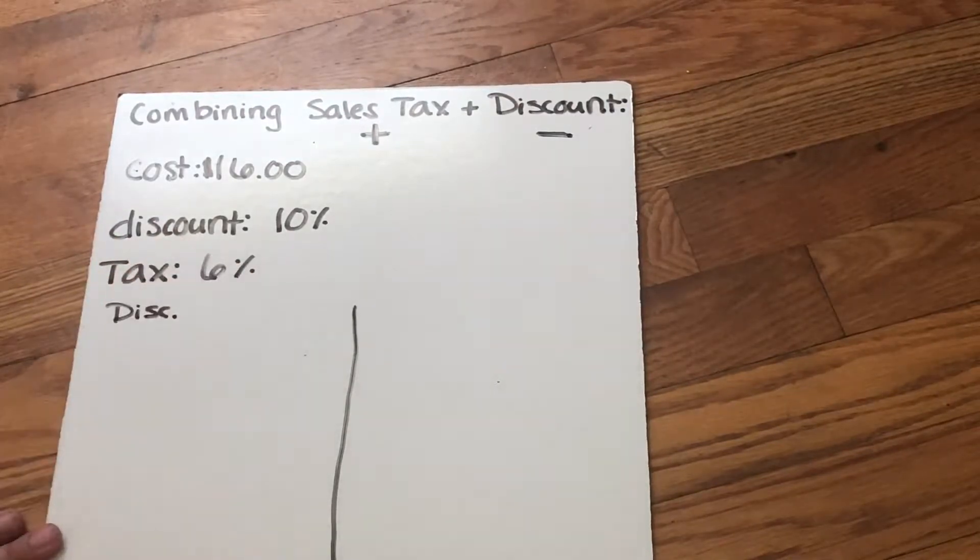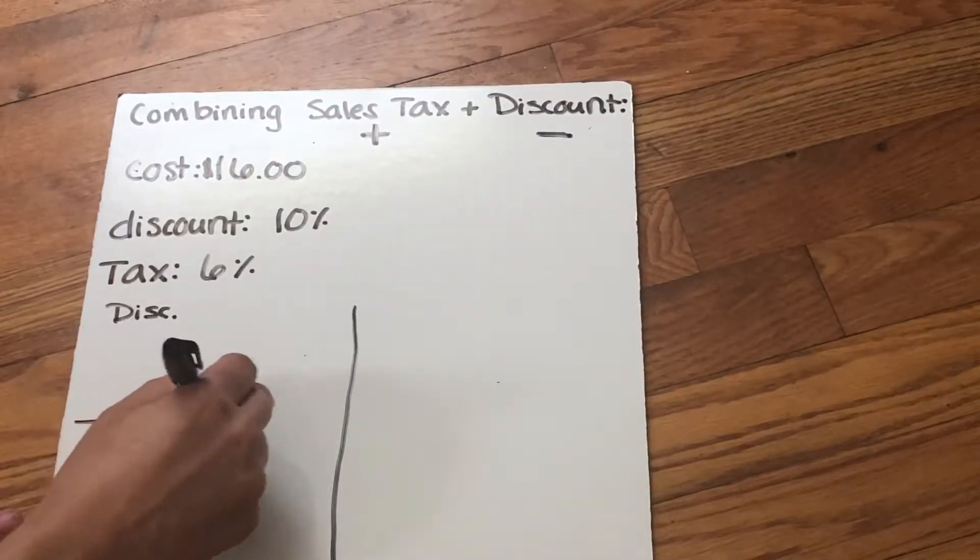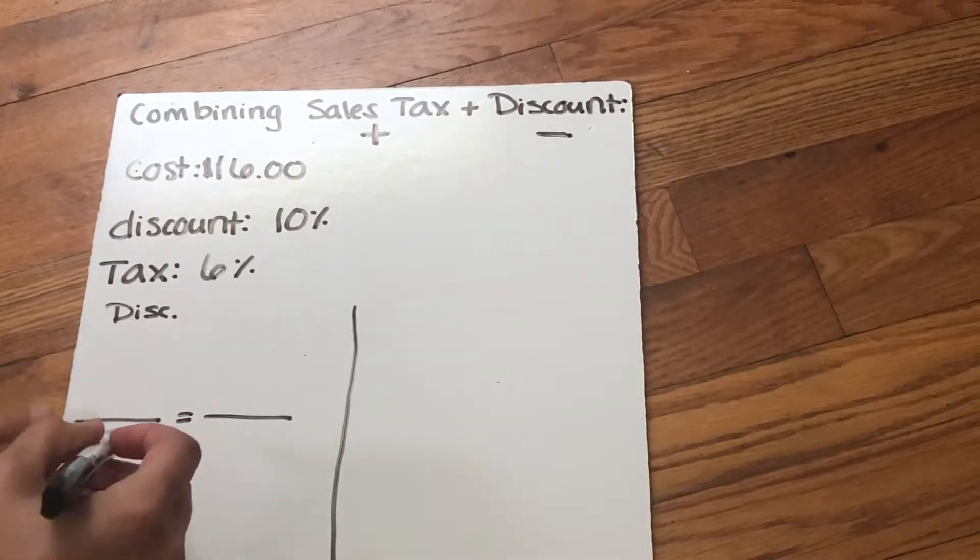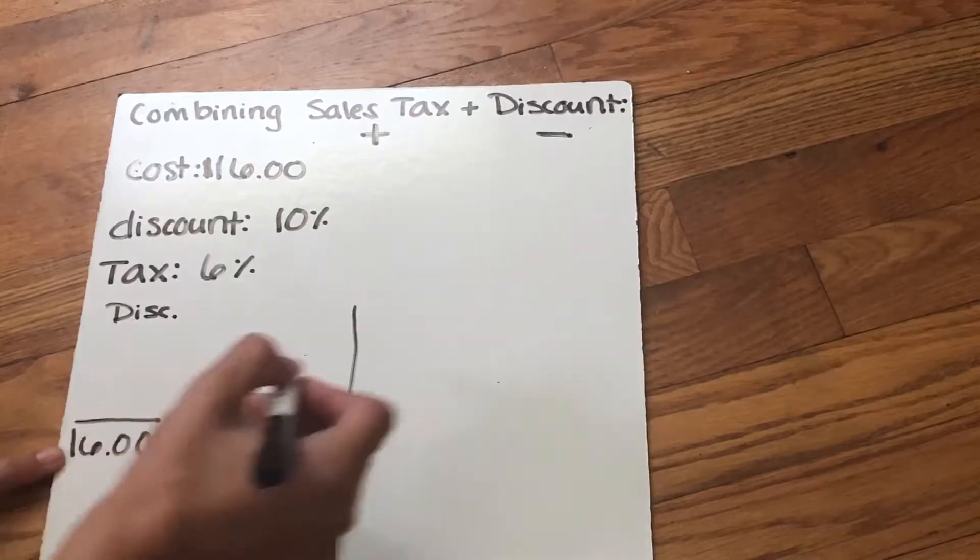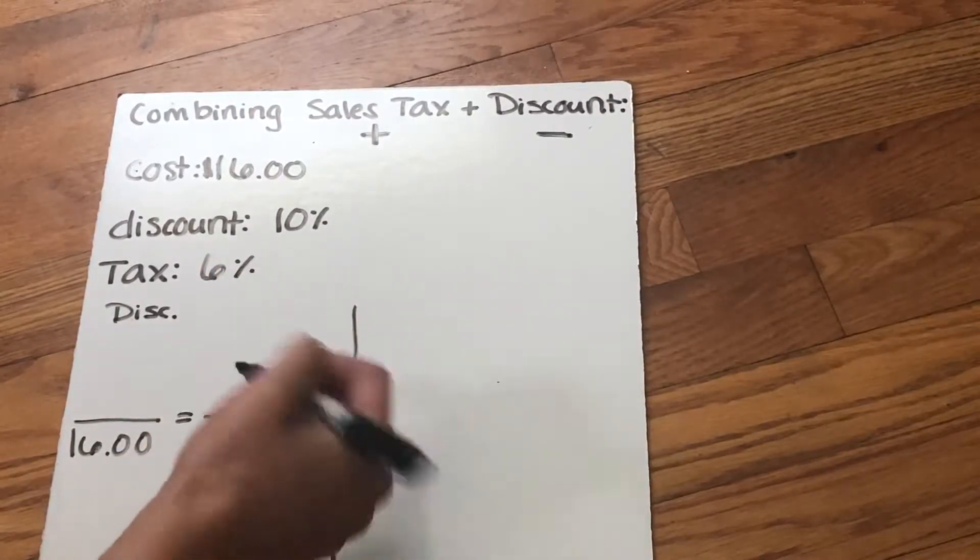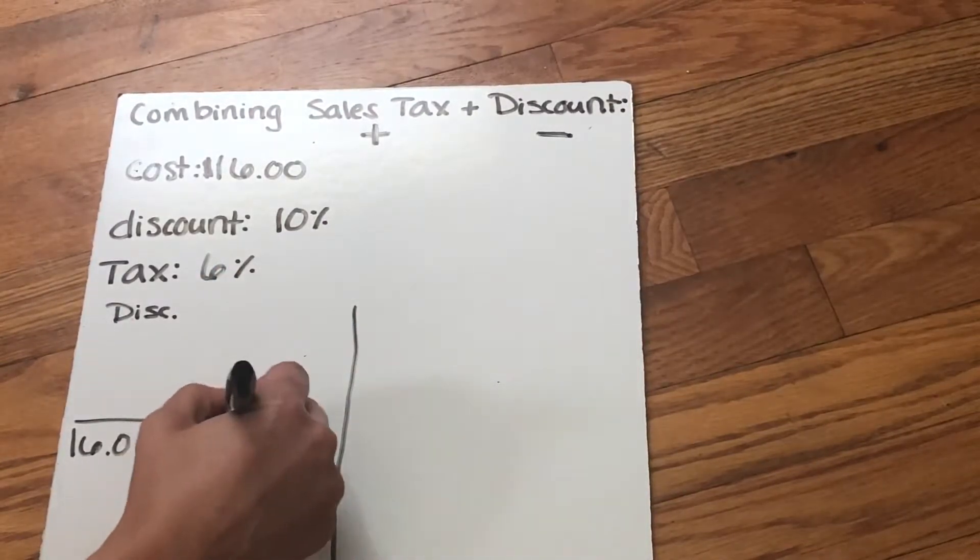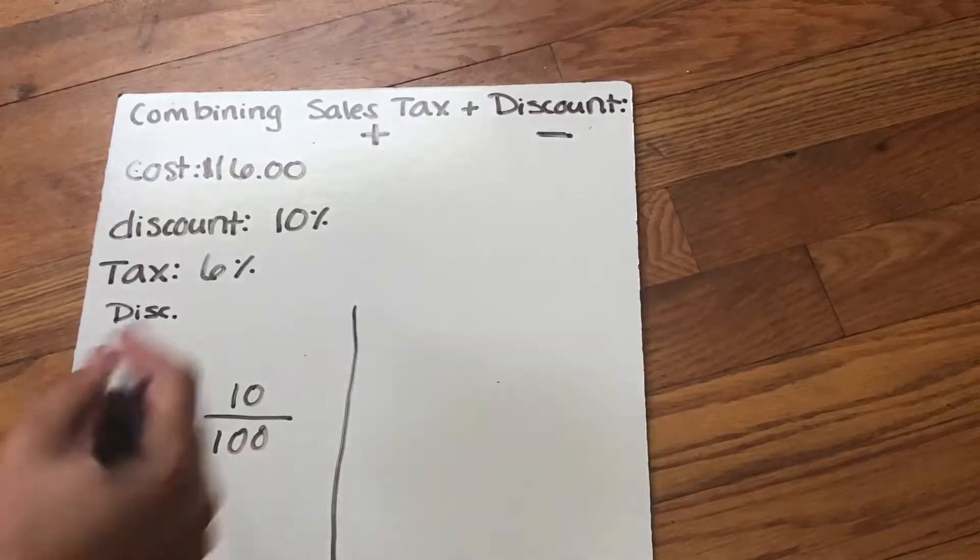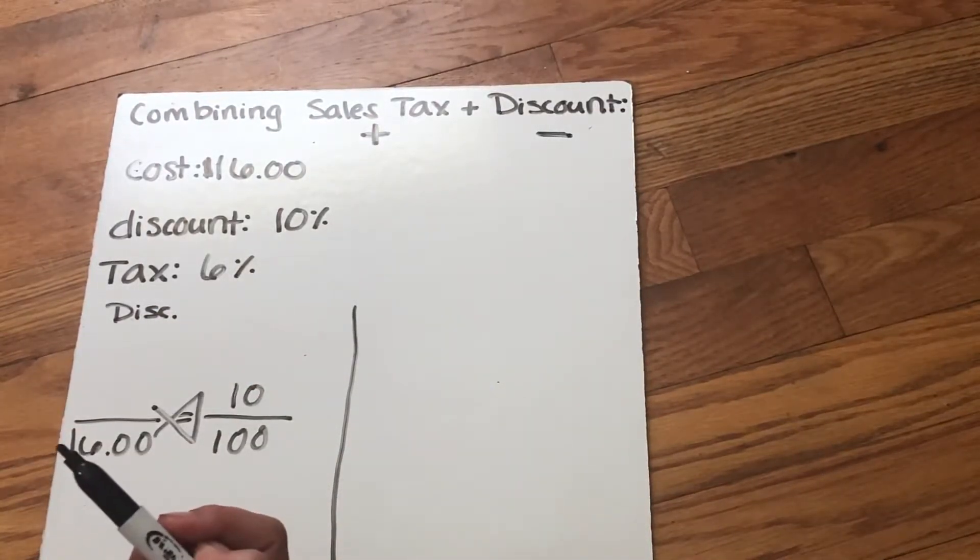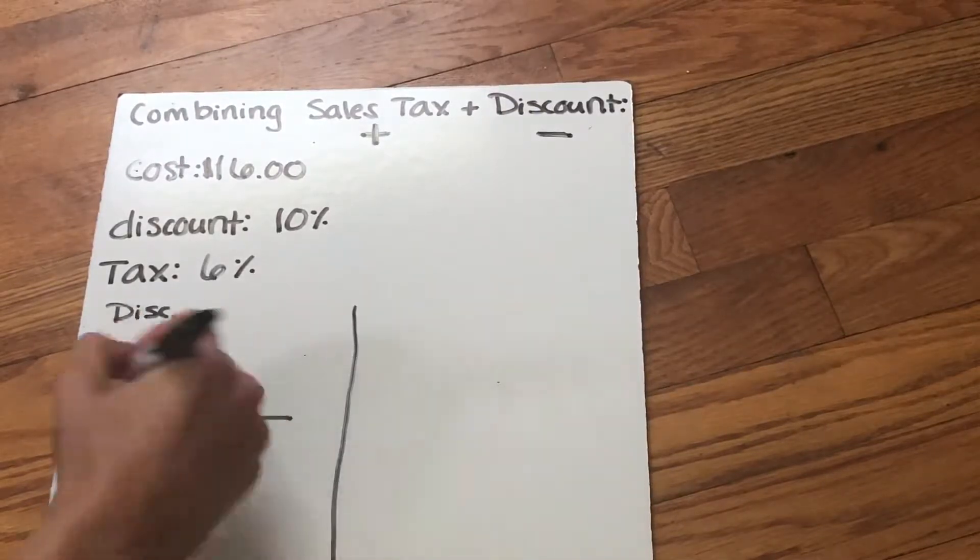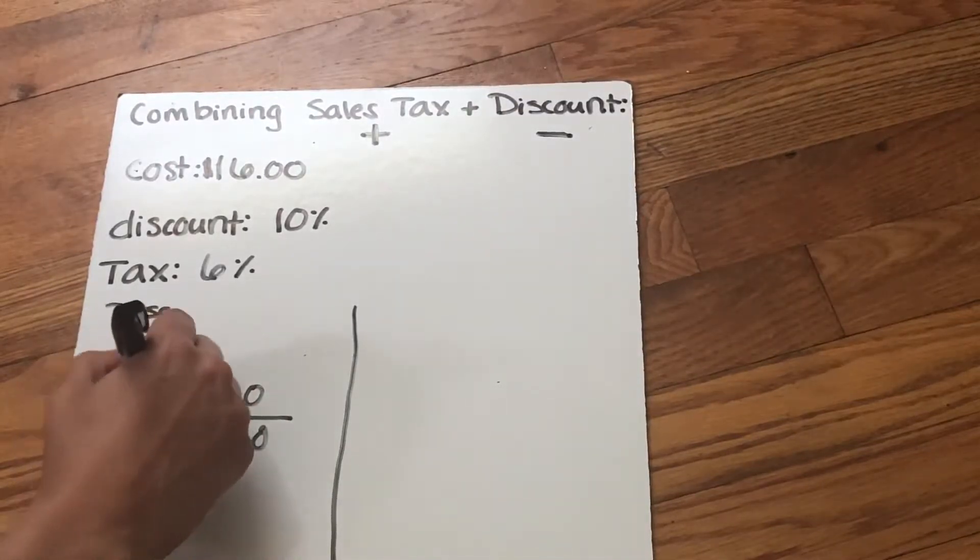So I'm gonna get ready for my discount first. I'm gonna label it discount, and I know I need to set up a skeleton. I have part over whole. The whole cost is $16. And then I know percent always goes over 100, so I'm gonna put 10 over 100. Now I can do cross multiply and divide. When I do that, my discount's gonna be $1.60.